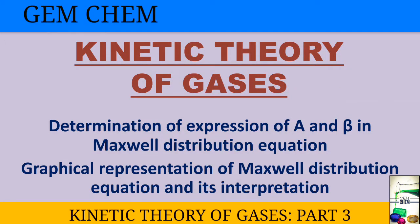Hi everyone, welcome to JMKIM. Today we will learn about the determination of the values of A and beta present in the Maxwell distribution equation. We will also see the graphical representation of Maxwell distribution both for velocity in one direction (x, y, or z) and for the Maxwell distribution equation for speed. Before starting, if you have not watched kinetic theory of gases it will be helpful.